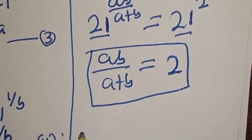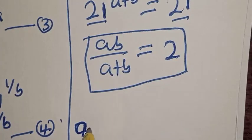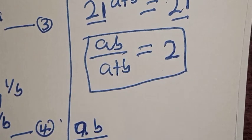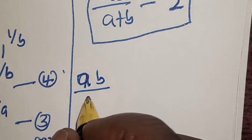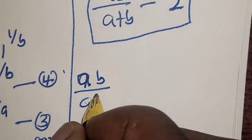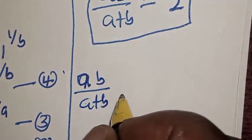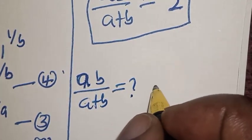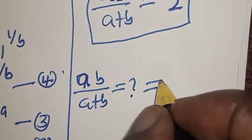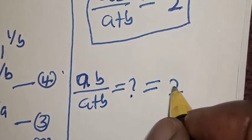Therefore, ab divided by a plus b is equal to 2.